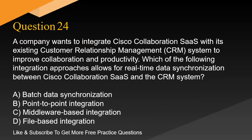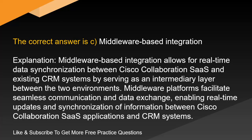Question 24. A company wants to integrate Cisco collaboration SaaS with its existing customer relationship management (CRM) system to improve collaboration and productivity. Which of the following integration approaches allows for real-time data synchronization between Cisco collaboration SaaS and the CRM system? A. Batch data synchronization. B. Point-to-point integration. C. Middleware-based integration. D. File-based integration. The correct answer is C. Middleware-based integration. Middleware-based integration allows for real-time data synchronization between Cisco collaboration SaaS and existing CRM systems by serving as an intermediary layer between the two environments, facilitating seamless communication, and enabling real-time updates and synchronization of information.